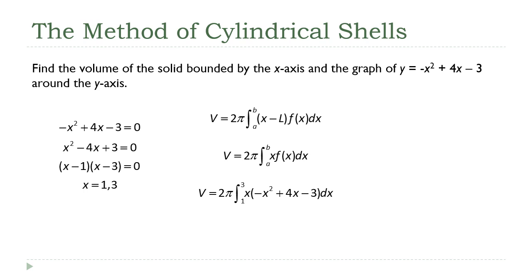But I'll walk through the steps here. If we distribute the x into the parentheses, it becomes the integral of negative x cubed plus 4x squared minus 3x. Integrate each of the individual terms using the power rule. So this becomes negative x to the fourth over 4 plus 4x cubed over 3 minus 3x squared over 2.